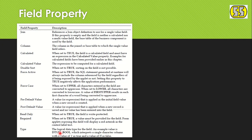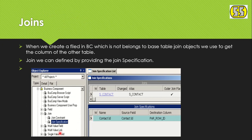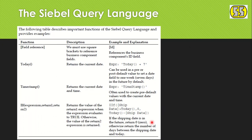Moving to Joins — if you haven't understood this, please go back to my previous video on BC Joins where I explained it in detail. In a Join, we provide the table name. These are the key things to provide. Now let's move to Siebel Query Language.